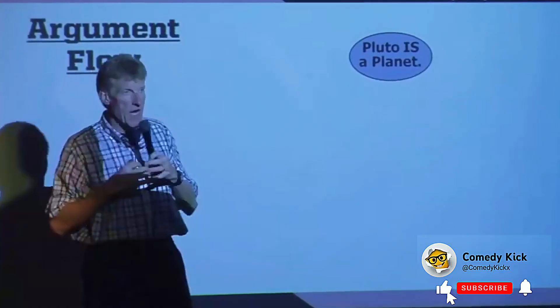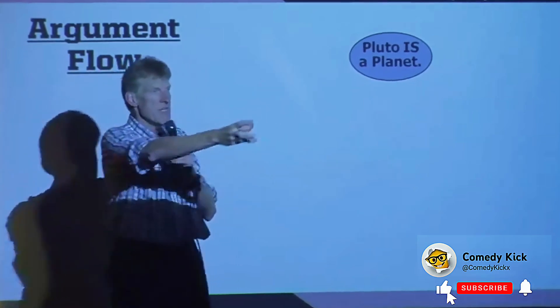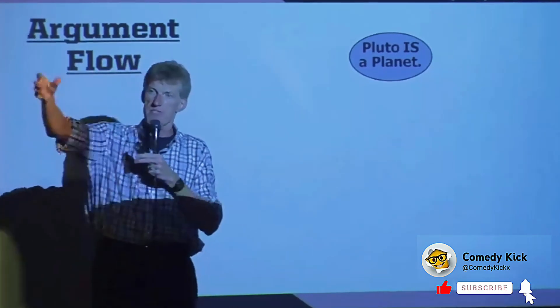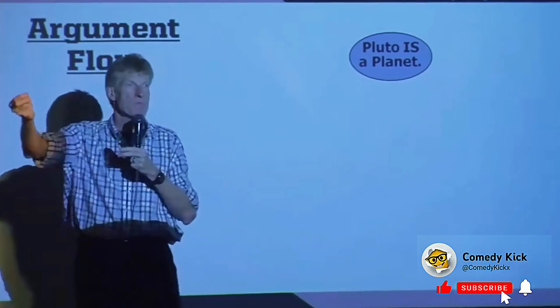I actually flowcharted a real argument my wife and I had. I was hanging my son's mobile of all the planets in his room. So I hung the sun and then Mercury and Venus and the Earth and Mars, and I went to hang Pluto because it was in the box and I went, oh wait, Pluto's not a planet. I'm not going to hang it.